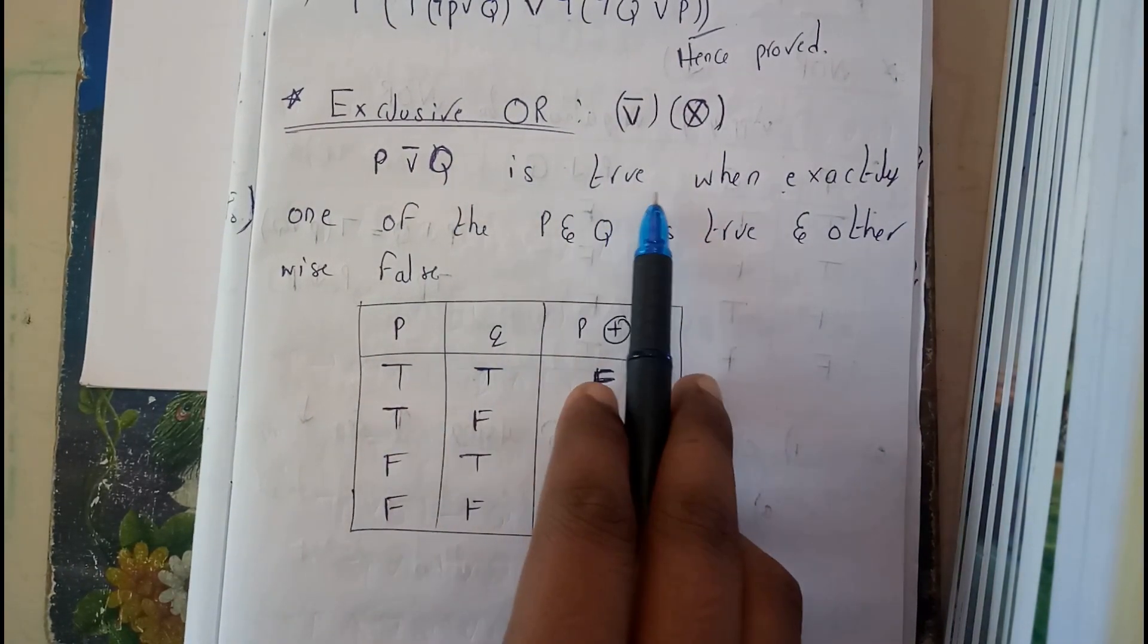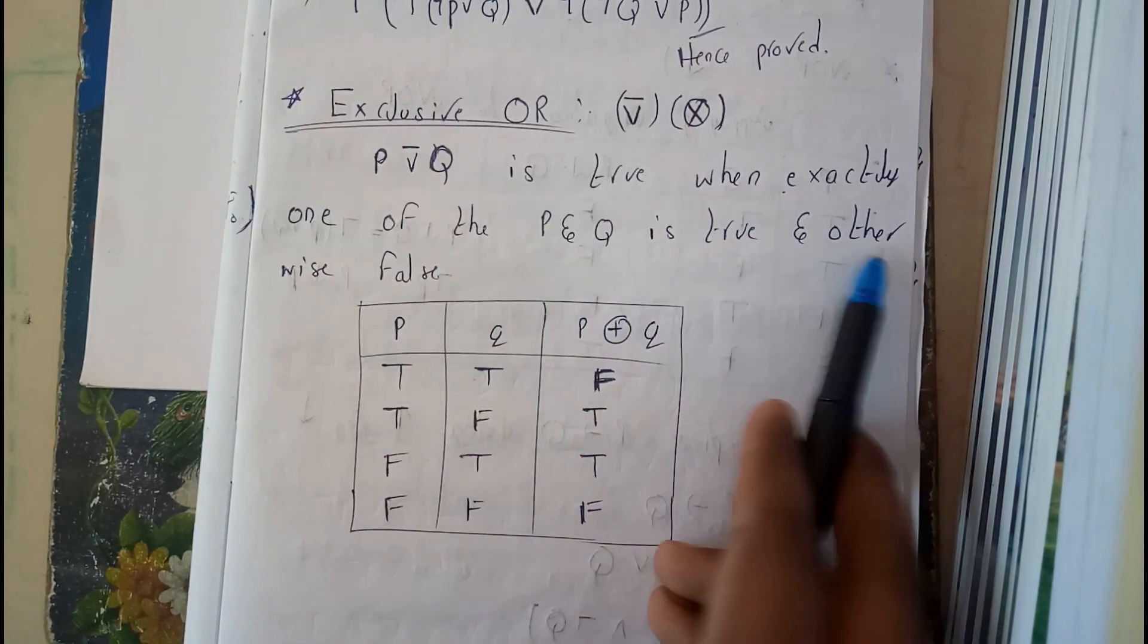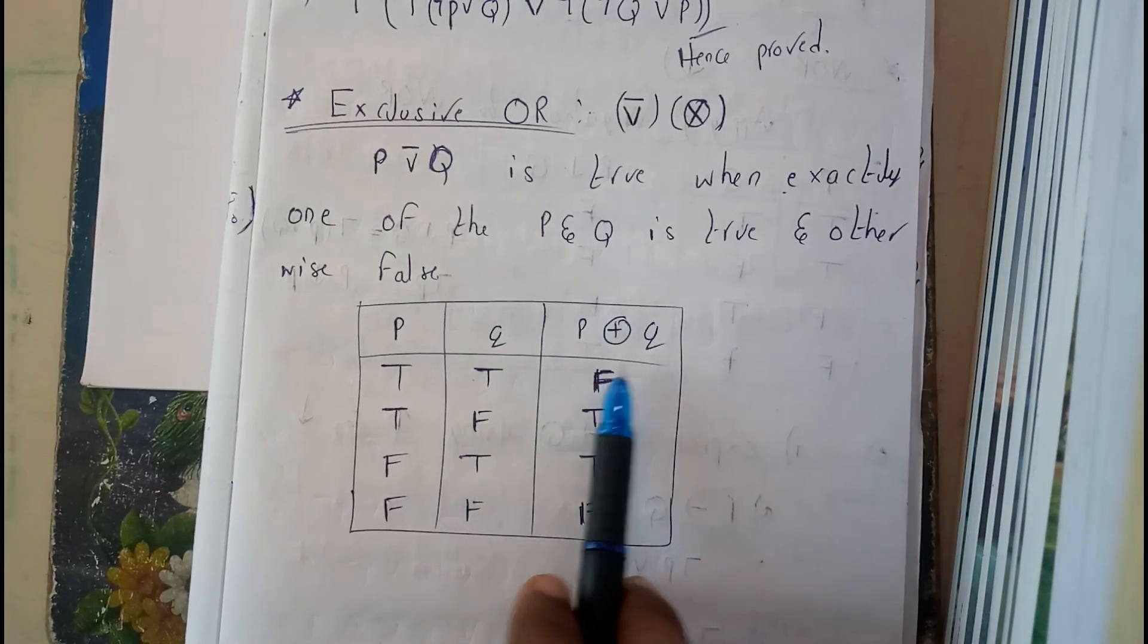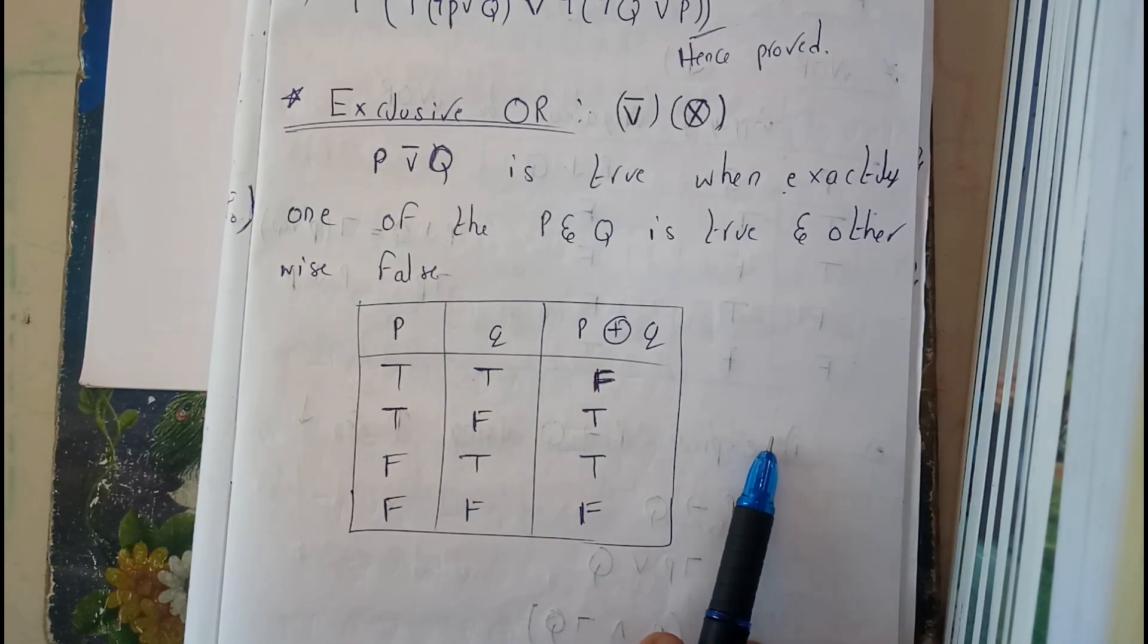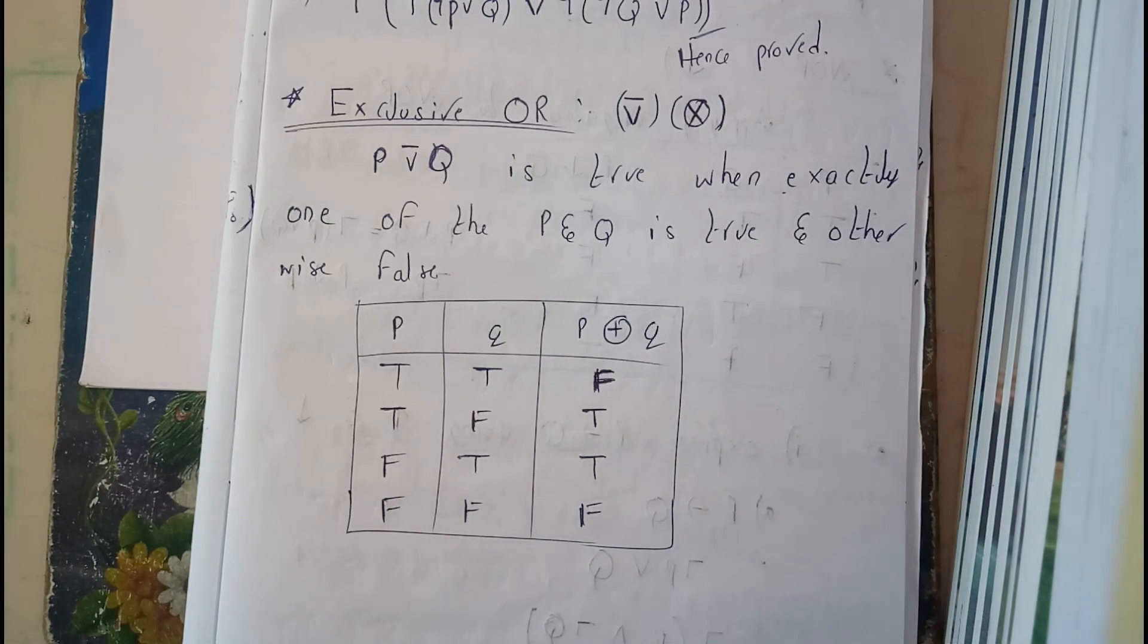P V bar Q is true when exactly one of P and Q is true, and otherwise false. Both should not be true, both should not be false, only then the result is true. Both should not be true, both should not be false, then the result is true, otherwise it is false. That's what the table indicates.